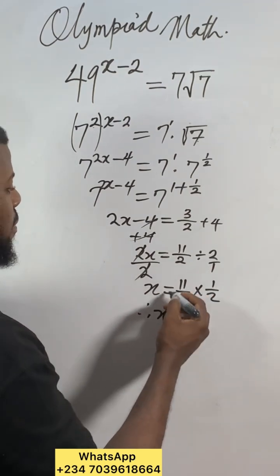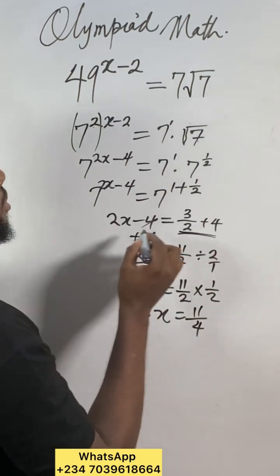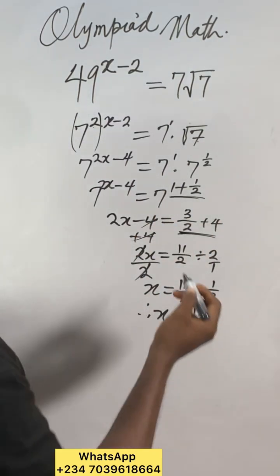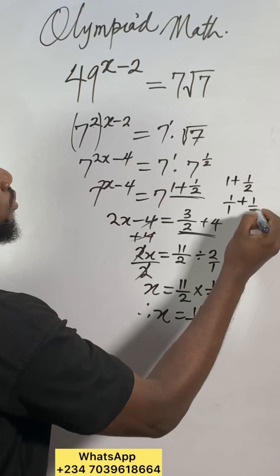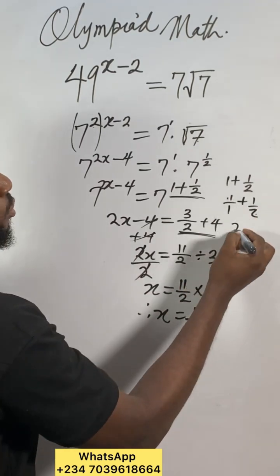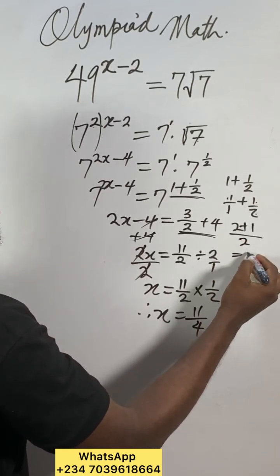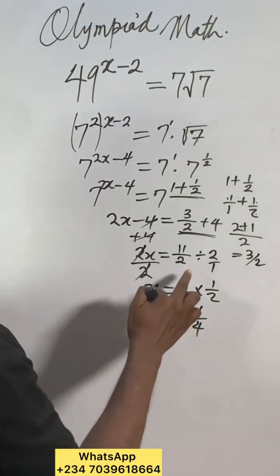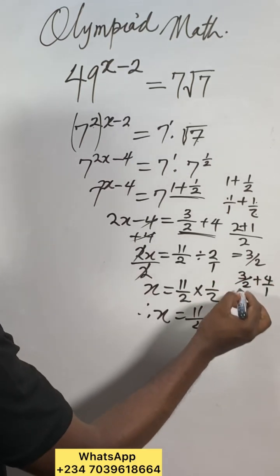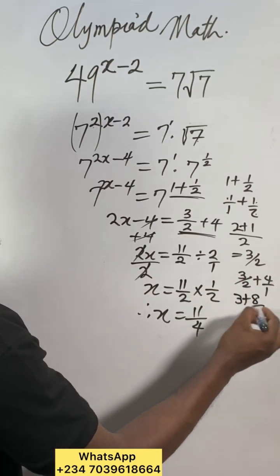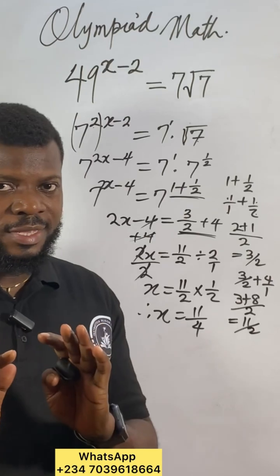So x equals 11 times 1 is 11 over 2 times 2 is 4. If you don't know how to get this, see the trick. Anytime you see 1 plus 1 over 2, it's the same as 1 over 1 plus 1 over 2. What we do: 2 times 1 is 2, 1 times 1 is 1 over 2 times 1 is 2. 2 plus 1 is 3 over 2. Very simple. Same thing with 3 over 2 plus 4 over 1: 1 times 3 is 3 plus 2 times 4 is 8 over 2 times 1 is 2. That gives us 11 over 2.